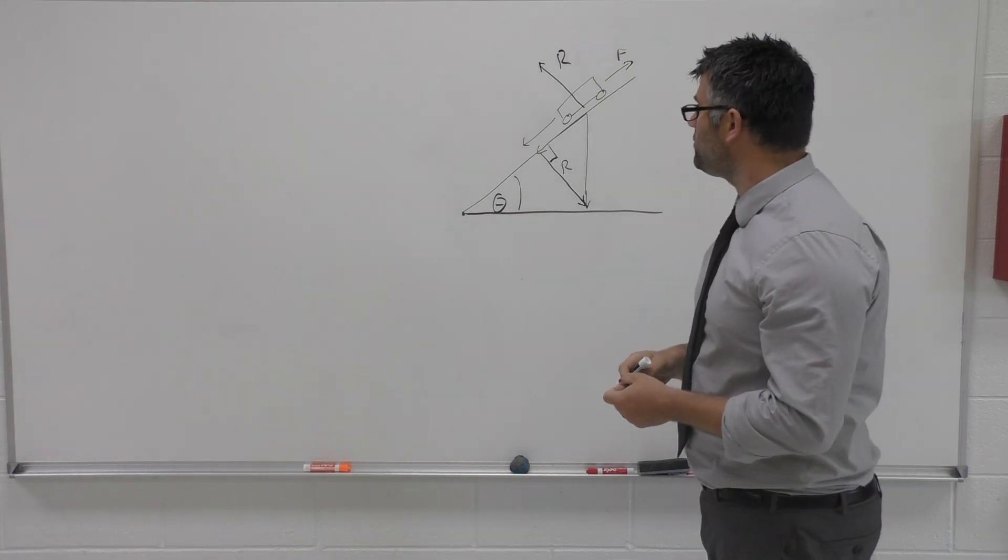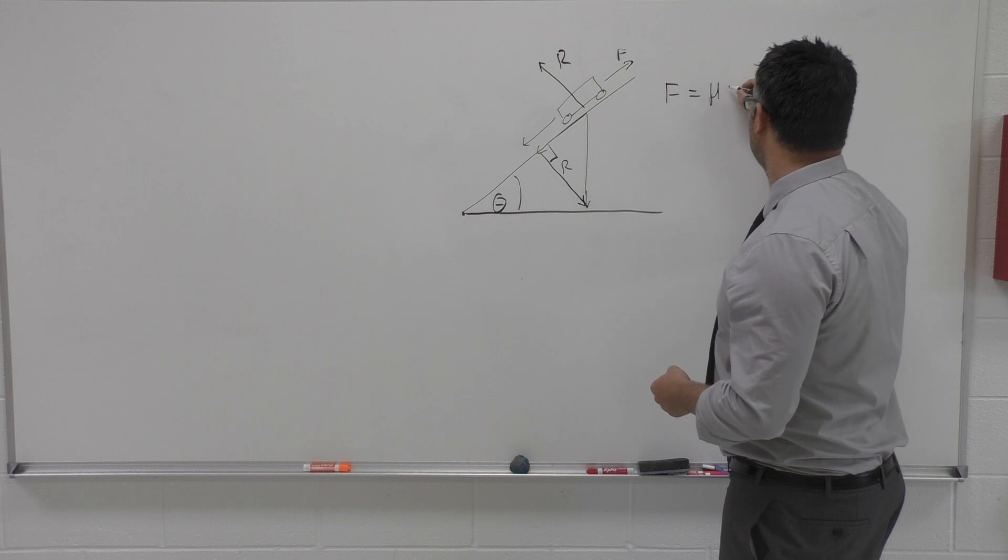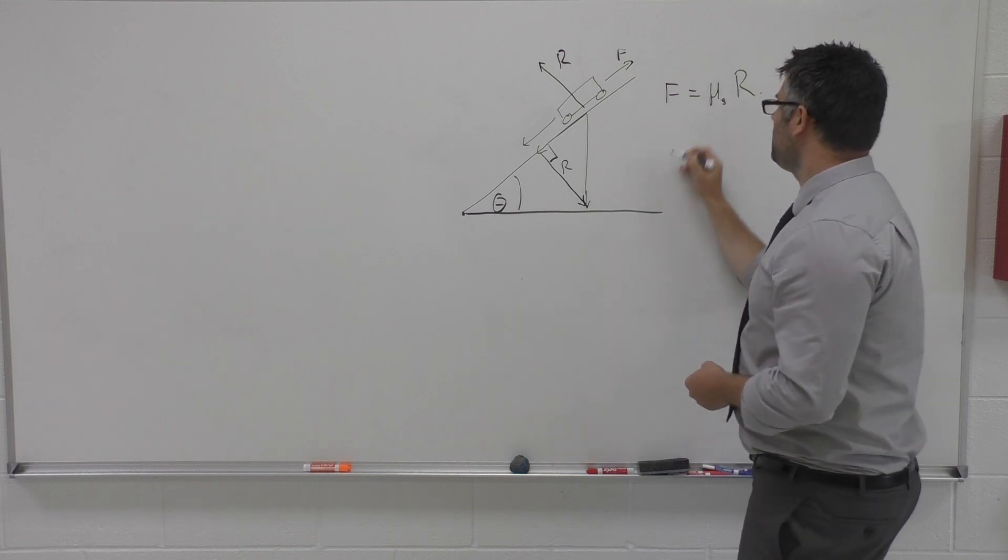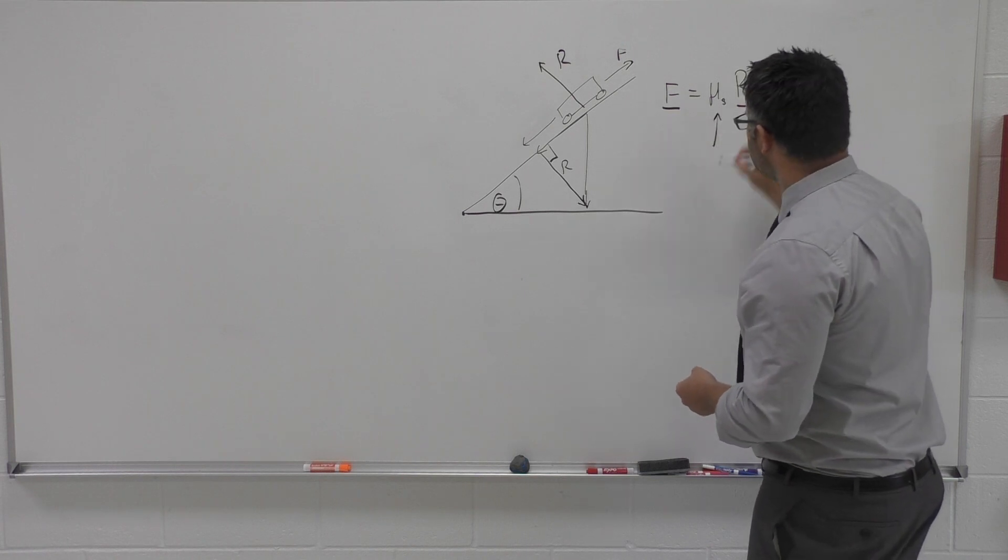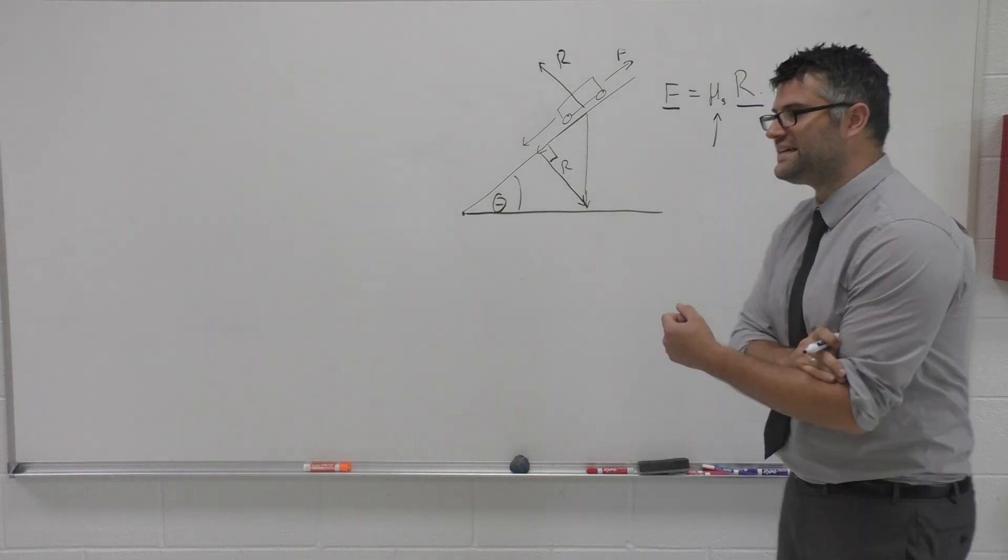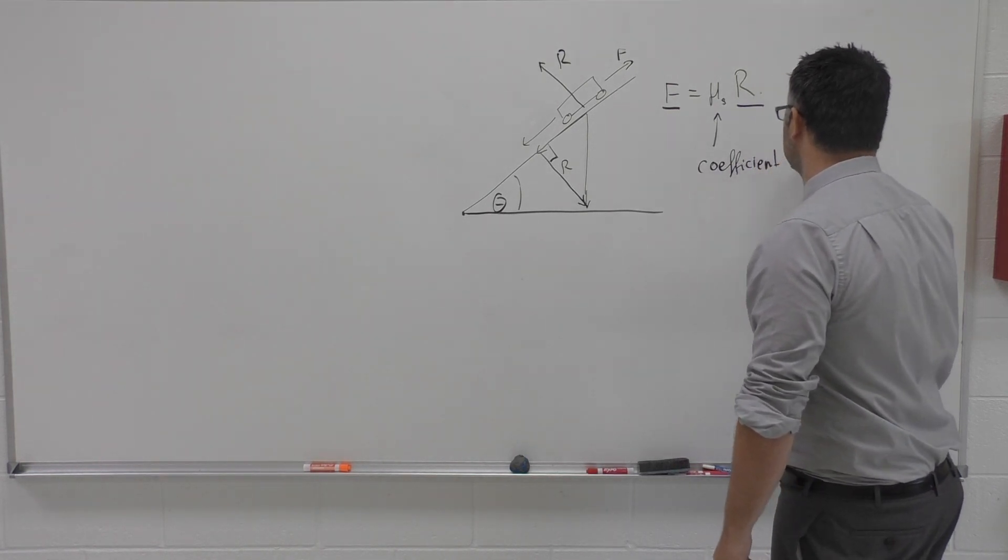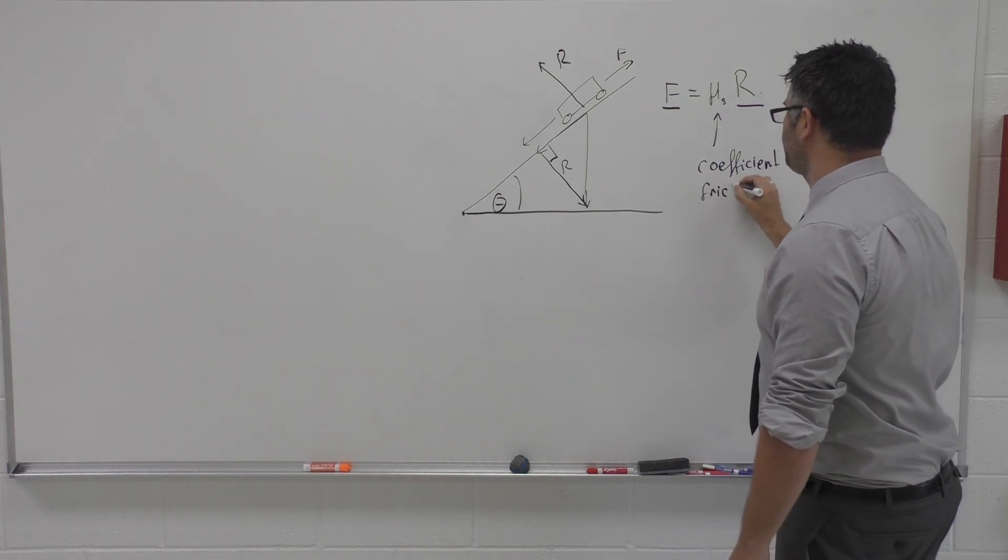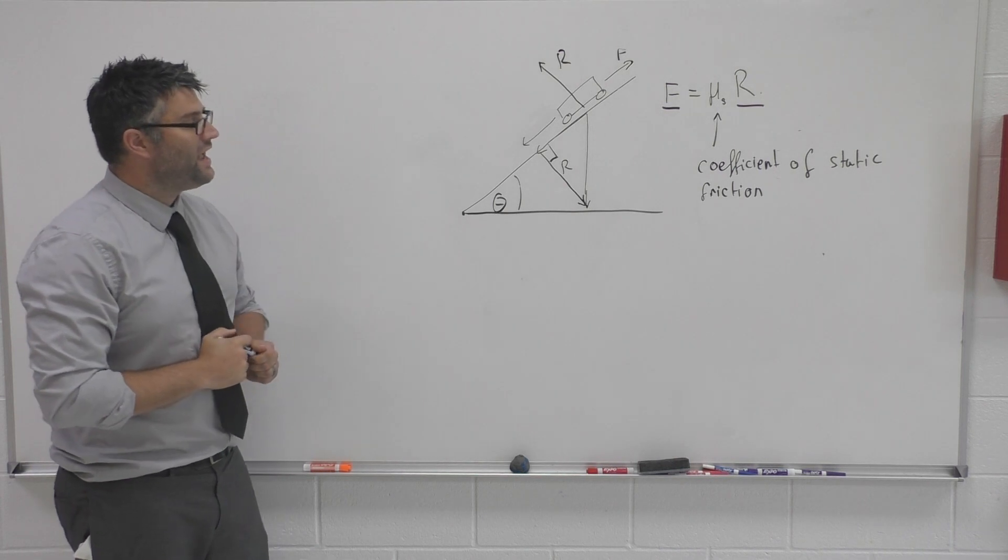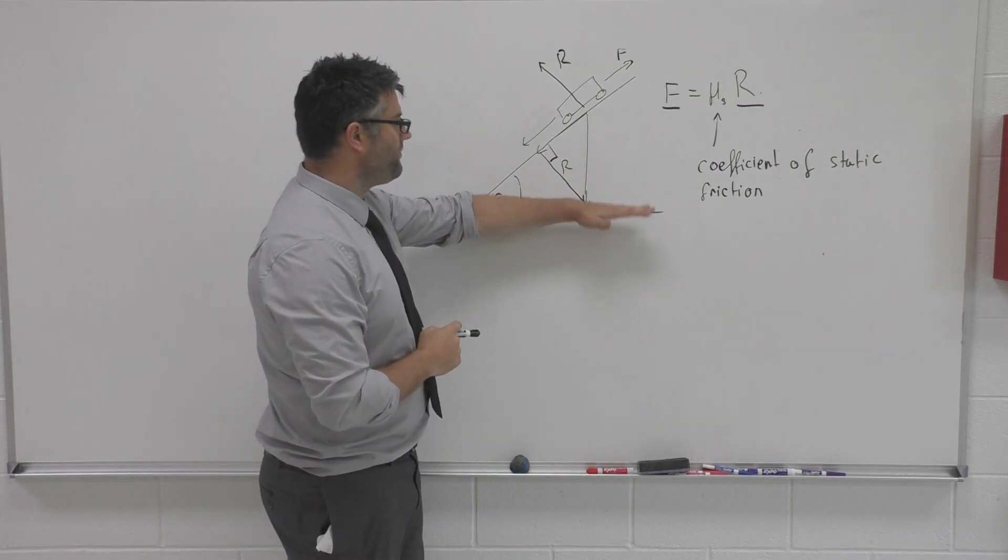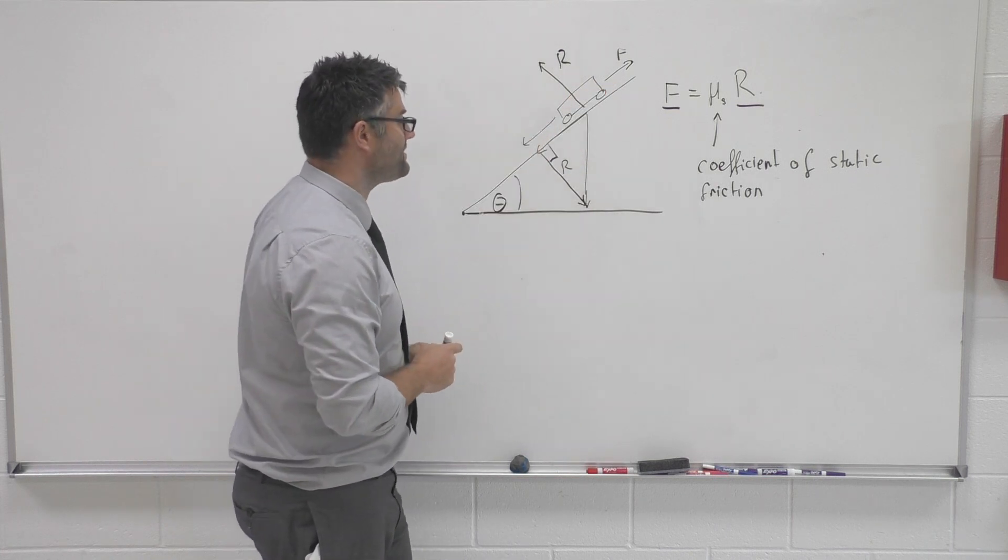So how do we relate the frictional force to R? Well it's related like this, so F is equal to mu S R. Where F is the force of friction and R is that normal reaction force there. This is a constant and this is called the coefficient of static friction. Static friction. So the coefficient of static friction is a constant for this circumstance and as we rotate this, as we move this up, we can actually use this as a simple methodology to allow us to work out what the coefficient of static friction is.